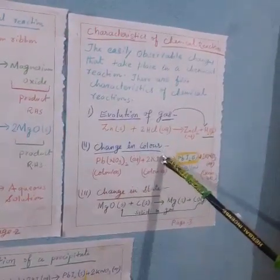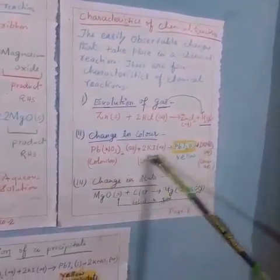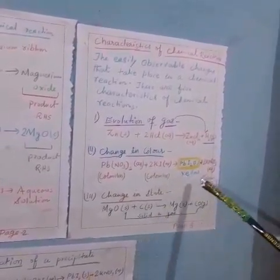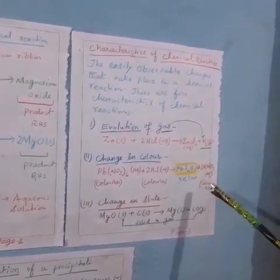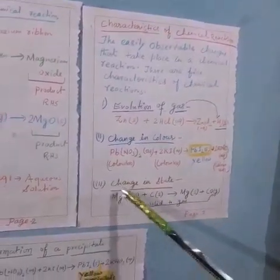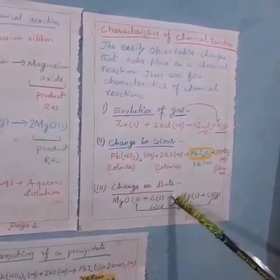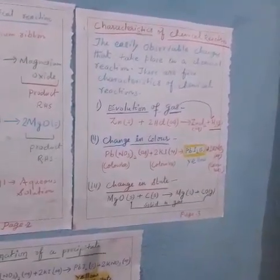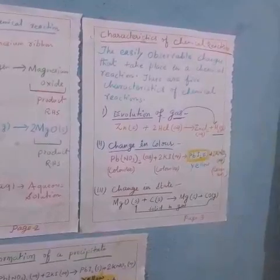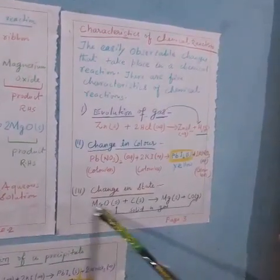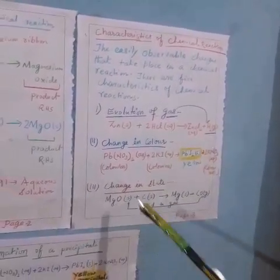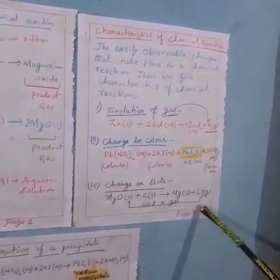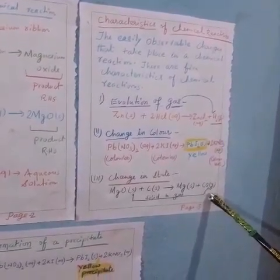The next one is change in color. That is explained by the following chemical reaction as, when lead nitrate is treated with potassium iodide, then yellow color of potassium iodide is obtained. Third one is change in state. Change in state means change in physical state. If the physical state of reactant and product are different from one another, that means there is a change in physical state. Here, by this equation, we can say that there is a change in physical state because here carbon is existing in the solid form, but on the right side, on the product side, there is a gaseous form of carbon monoxide.